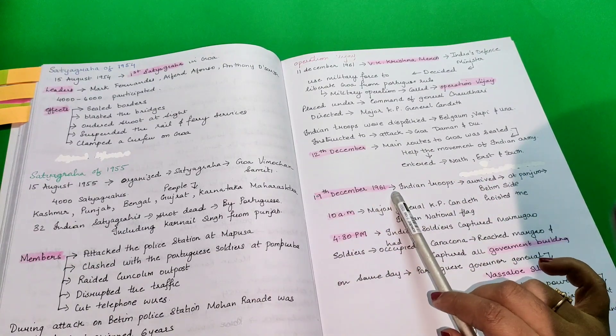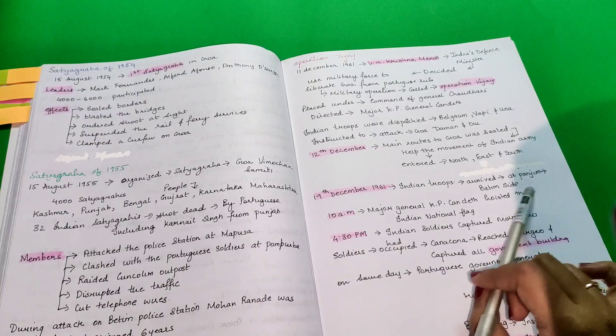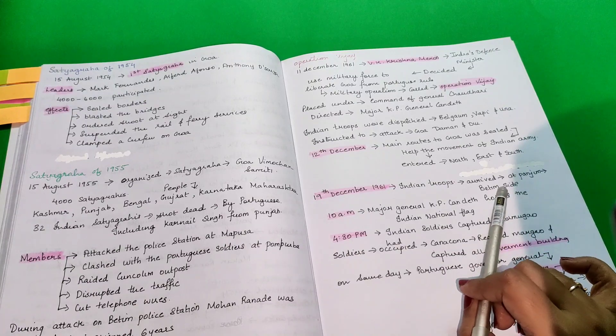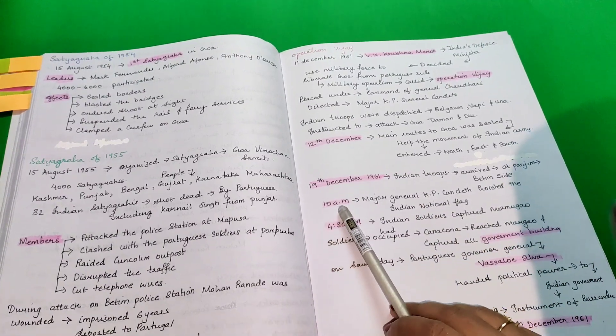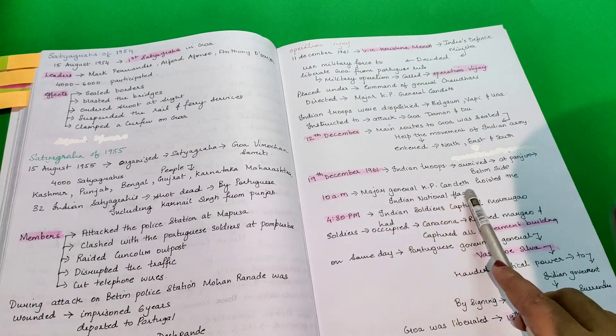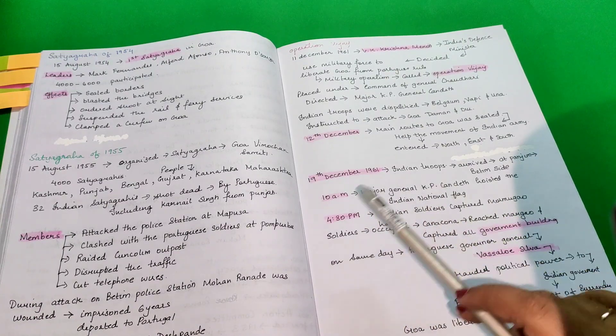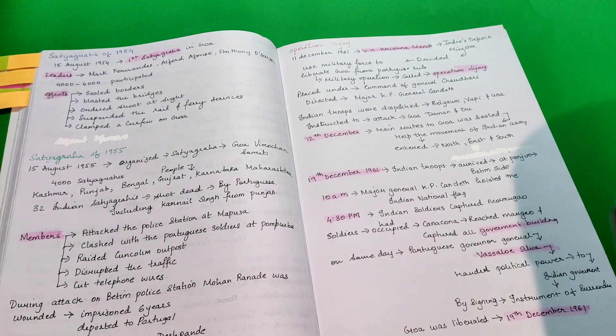On 19 December 1961, Indian troops arrived at Panjim, at the Betim side. At 10 a.m., Major General K.P. Candeth hoisted the Indian national flag and at 4:30 p.m., Indian soldiers captured Mormugao.